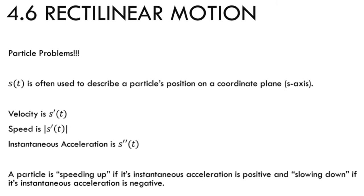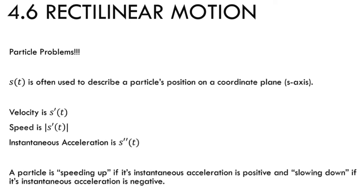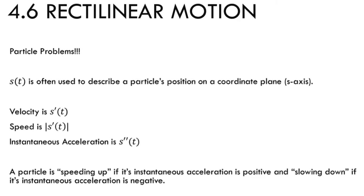Instantaneous velocity tells us how fast we're going at that exact moment — whether we're speeding up or slowing down. If I'm speeding up, the second derivative is positive; if I'm slowing down, the second derivative is negative.